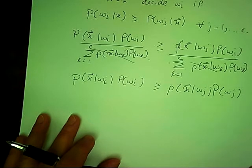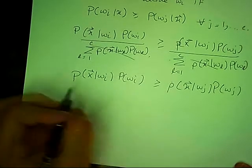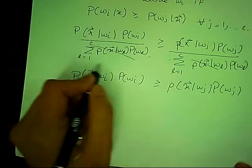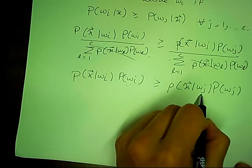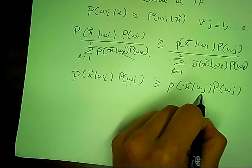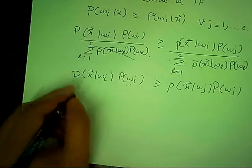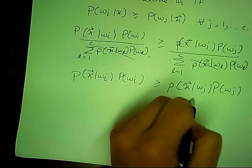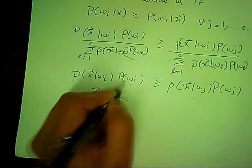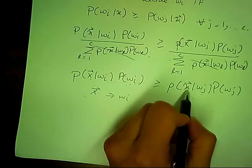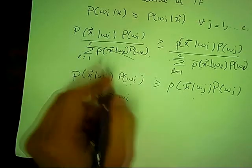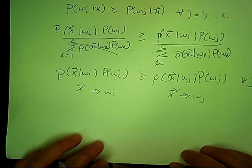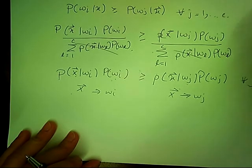So for the continuous case, given an X, choose a class such that the probability of X given the class times the prior of that class is greater than that of any other class. For instance, if a data point has a higher probability in class W_I than W_J, we classify X-bar with W_I. Conversely, if the probability of X given W_J is greater, then we classify X in W_J. That was Bayes' rule for the continuous case. Thank you for listening to this lecture.